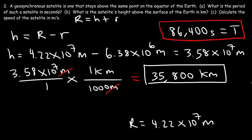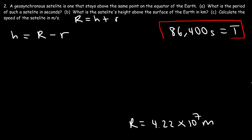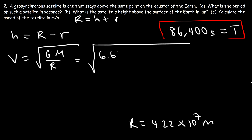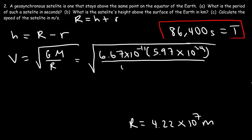Now the last thing we need to do is calculate the speed of the geosynchronous satellite. Going back to the equation v equals √(GM/R): G is 6.67 times 10 to the minus 11, the mass of the Earth is 5.97 times 10 to the 24, and the orbital radius R is 4.22 times 10 to the 7 — the distance between the center of the Earth and the center of the satellite. The speed of the satellite is 3,072 meters per second.